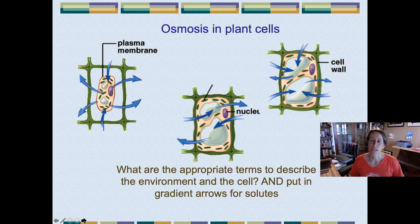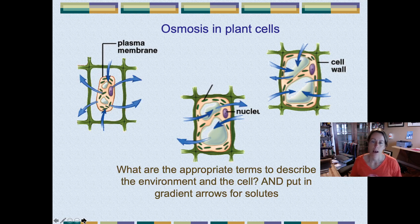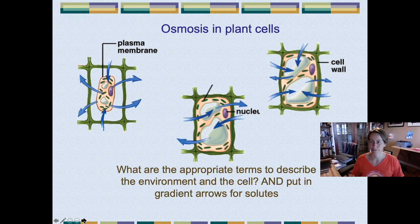So that's one of the main differences between animal and plant cells in terms of water uptake and how the cells behave. Plant cells will not lyse in a hypotonic environment, but animal cells will lyse if they're bathed in a hypotonic environment.